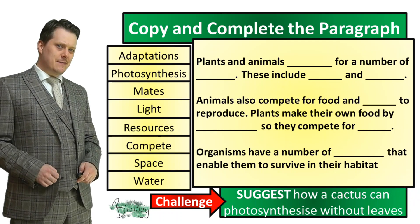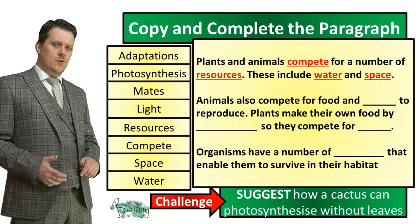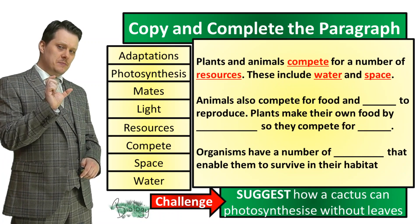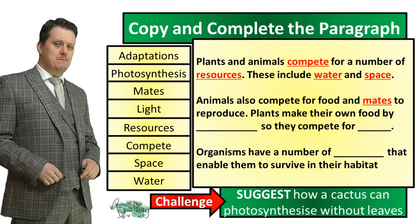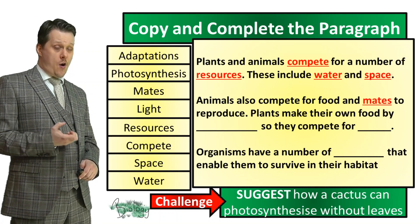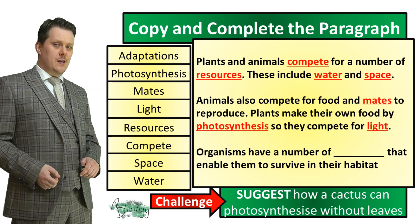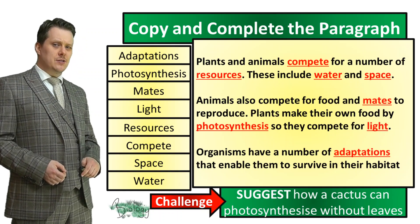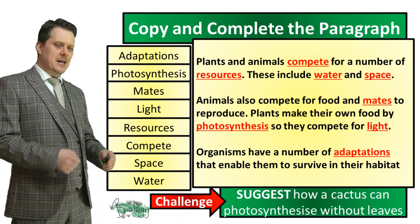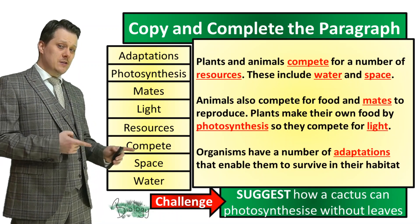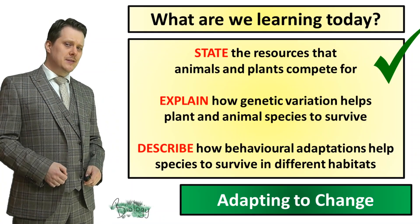Have you finished your paragraph? Let's go through it together. Plants and animals compete for a number of resources, and these include water and space — those two are interchangeable. Animals also compete for food and mates to reproduce. Plants make their own food by photosynthesis, and so they compete for light. Organisms have a number of adaptations that enable them to survive in their habitat. Now we can state the resources that animals and plants compete for.